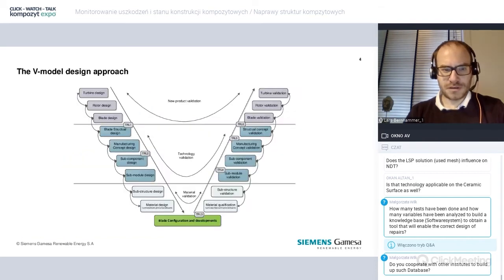The design process at Siemens Gamesa, we use a V-Model approach in breaking down the design requirements from a turbine on a rotor level, eventually on blade level, and then segmentize that further on blade structural design, on the manufacturing aspects, on the subcomponent, eventually until we are down at material level.